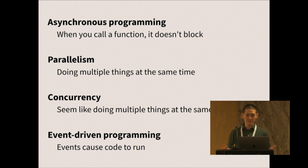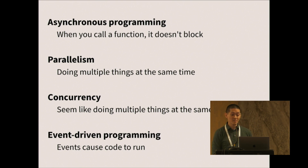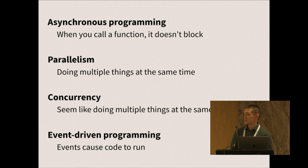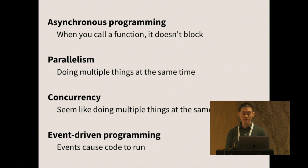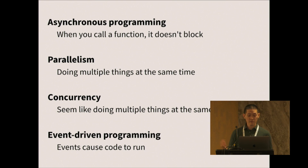Parallelism is when you do multiple things at the same time — very common on modern computers with multiple cores. Concurrency is when it seems like you're doing multiple things at the same time, but you might not actually be. If you're familiar with JavaScript in a web browser, it's single-threaded, but it can seem like a web page is doing a lot of things at once by splitting its time between different tasks and switching very quickly. And finally, there's event-driven programming, where events occur — some outside signal — and that causes some code to run.